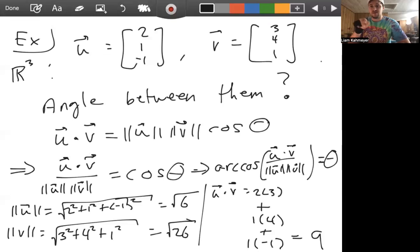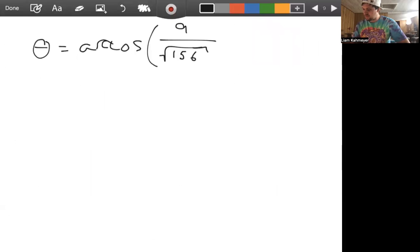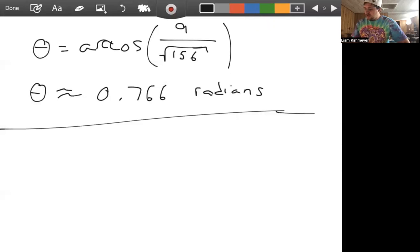And if you plug this into a calculator, you get that this is approximately 0.766 radians. And for perspective, remember pi would be 3.14 radians, pi over 2 would be 3.14 over 2 radians, and so this would lie in the first quadrant.